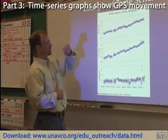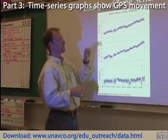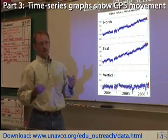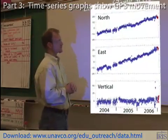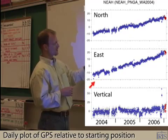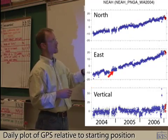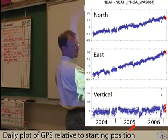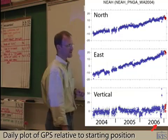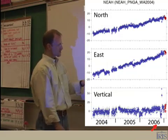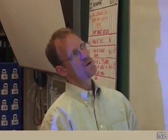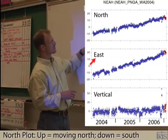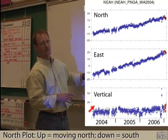Basically what it boils down to — and you can get this off the websites that support the GPS monuments themselves — each dot represents a daily plot of where it is. The time scale in this case goes from 2004 to about 2007, and each dot is per day. The way it's broken up is into a north plot, an east plot, and a height plot.